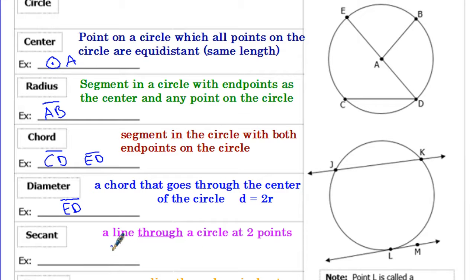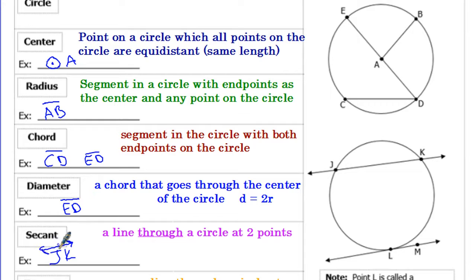A secant line is a line — not a segment — that goes through the circle at two points. So this line is going through the circle at two different points; we could say line JK with arrows. The difference is we put arrows for a line. So JK without arrows would be a chord, while JK the line is a secant.